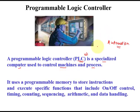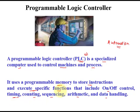Now the definition of a PLC: a PLC has a programmable memory in which we store a set of instructions — a program — which executes specific functions. Those functions include on/off control, timing, counting, sequencing, arithmetic, and data handling. On/off control means turning something on or off. Timing function means turning output devices on or off after some delay.